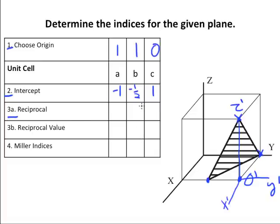Next, we take the reciprocals. So this would be 1 over negative 1. This would be 1 over negative 1 half, and this would be 1 over 1. Then we find our reciprocal values. So this would be negative 1, negative 2, and 1. Finally, we make our indices pretty. We get rid of fractions. We put bars over negatives. So ours becomes bar 1, bar 2, and 1, all in parentheses.